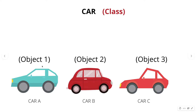Suppose we call car attributes: color, make. Car A, object 1 — the object is defined. This is called a class.